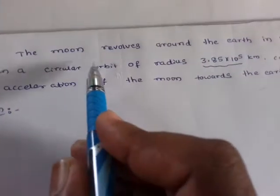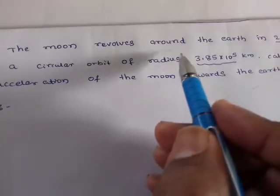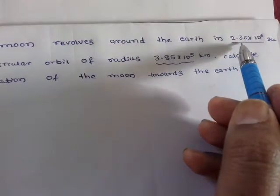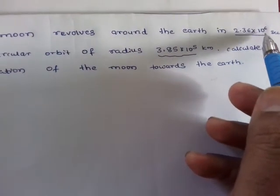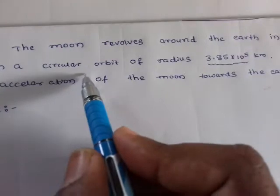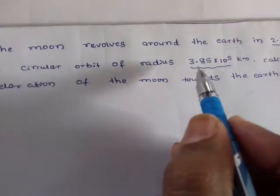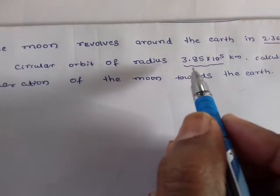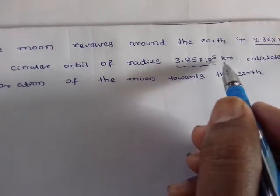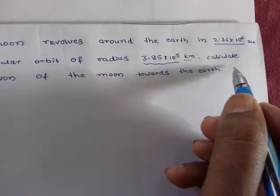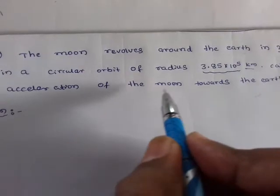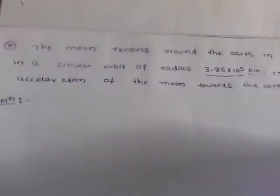The moon revolves around the earth in 2.36 × 10⁶ seconds in a circular orbit of radius 3.85 × 10⁵ km. Calculate the acceleration of the moon towards the earth.